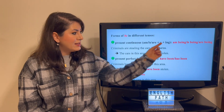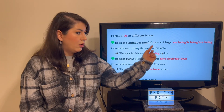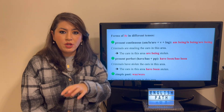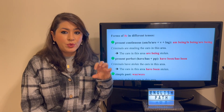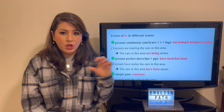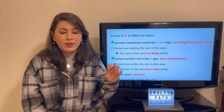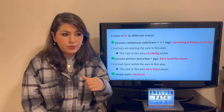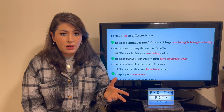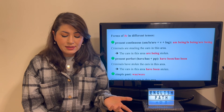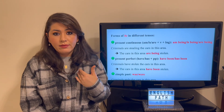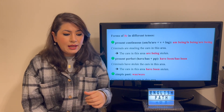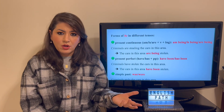The present continuous tense has the formula am/is/are + verb-ing. Instead of that verb, you use 'be,' giving you: am being, is being, are being. Those are the forms of 'be' in the present continuous tense. Match them in number with your subject: if the subject is 'I,' use 'am being'; if it's she/he/it, use 'is being'; and if it's plural, use 'are being.'